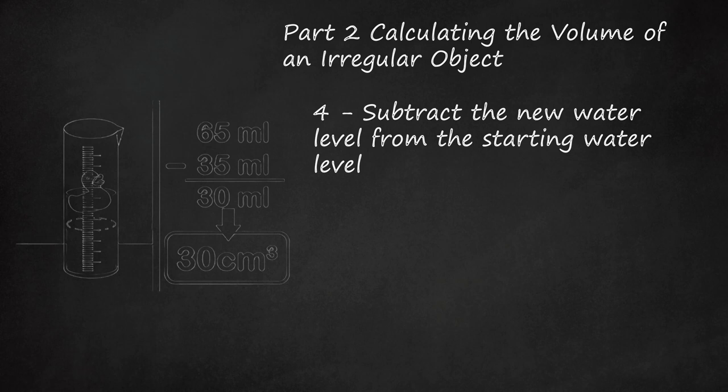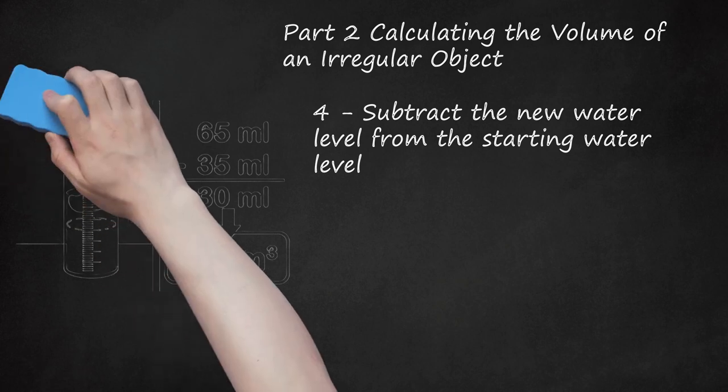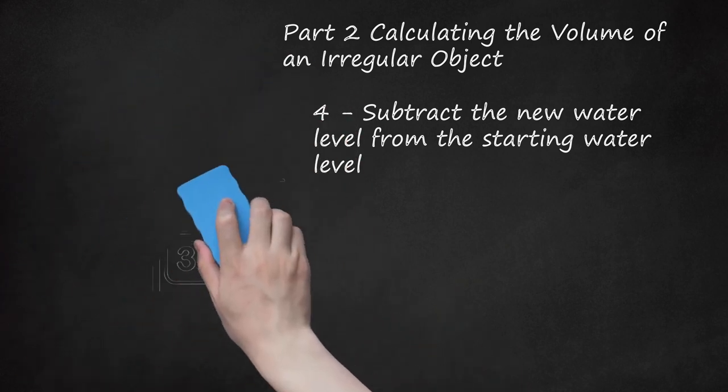For example, if you started with 35 milliliters of water and ended with 65 milliliters of water, the volume of your object is 65 - 35 = 30 milliliters or 30 cubic centimeters.